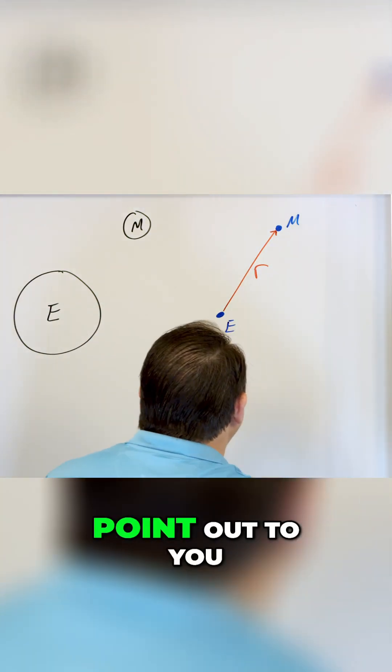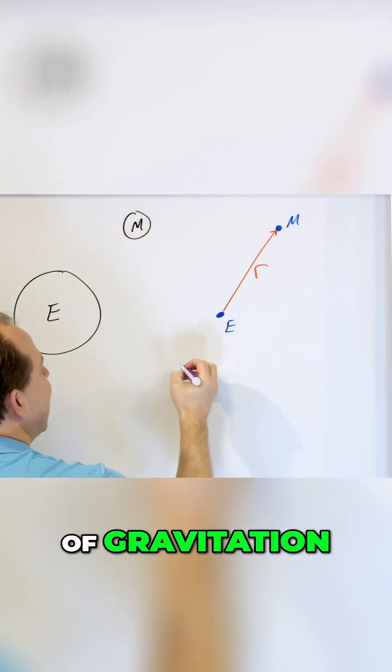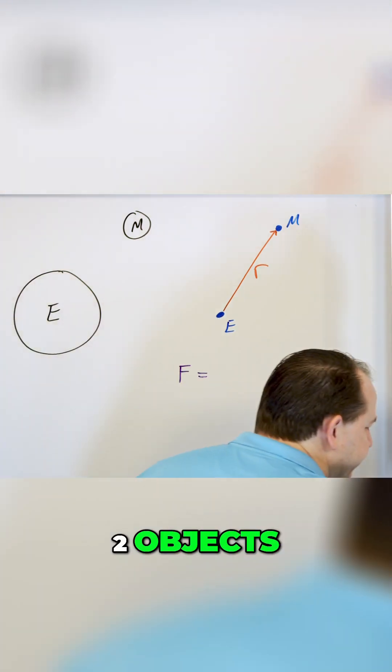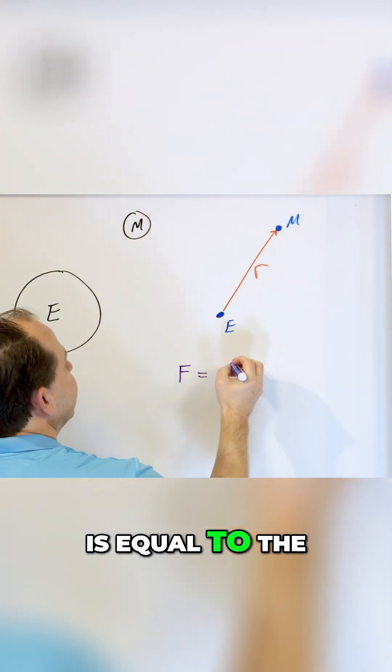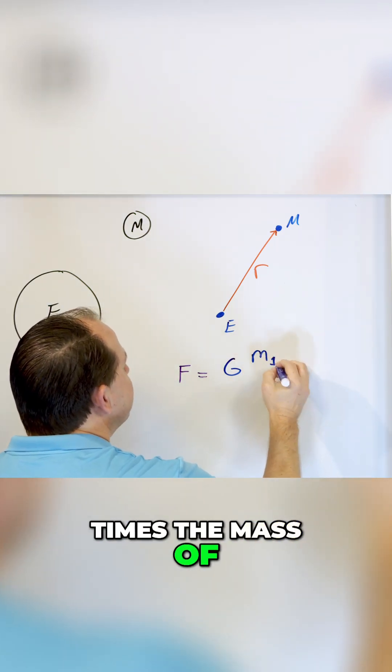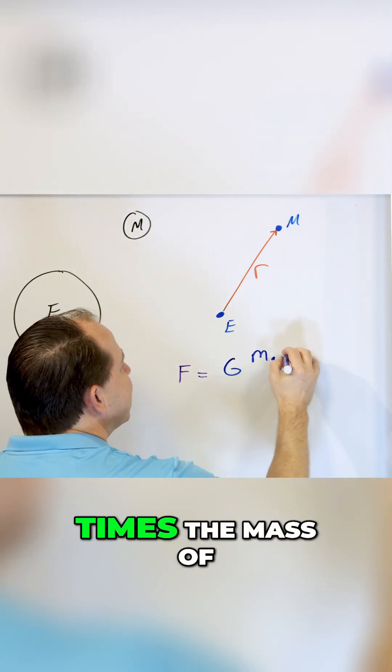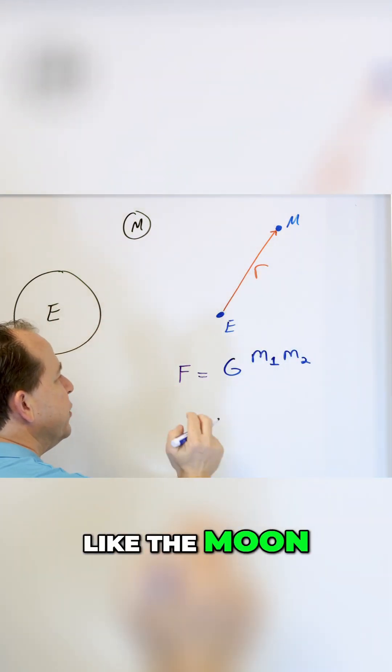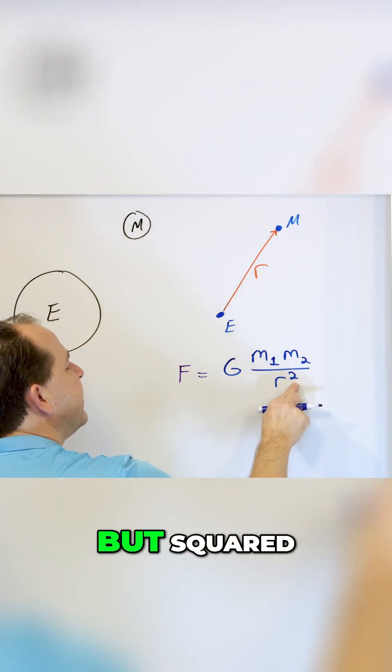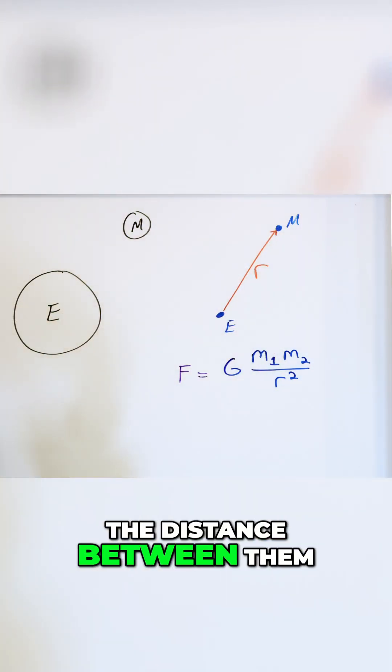Now, what I want to point out to you is that the law of gravitation, the force between any two objects, is equal to the gravitational constant, which is just a number, times the mass of body number one, like the Earth, times the mass of body two, like the moon, and all of that stuff is divided by the distance between them, but squared, the distance between them.